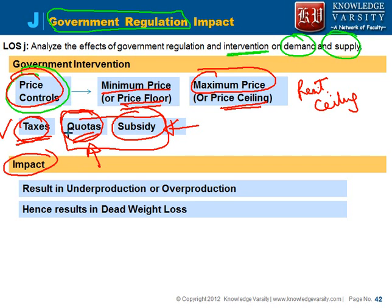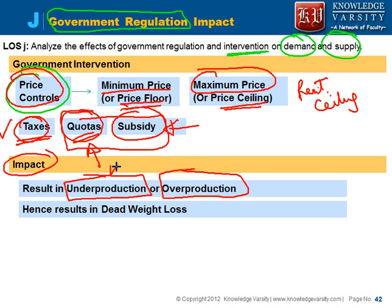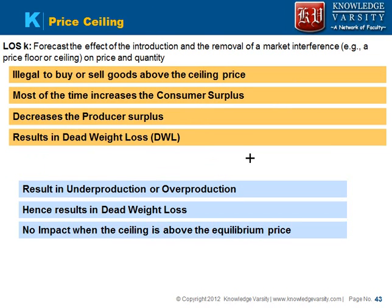The impact of all these interventions is that they would result in either under-production or over-production, and as we have seen, either under-production or over-production would result in dead weight loss. First, let us see what a price ceiling is. In a price ceiling, it is illegal to buy or sell goods above the ceiling price.